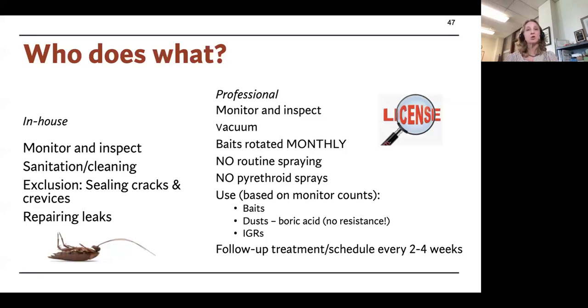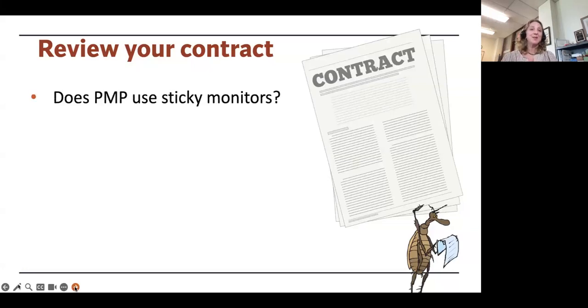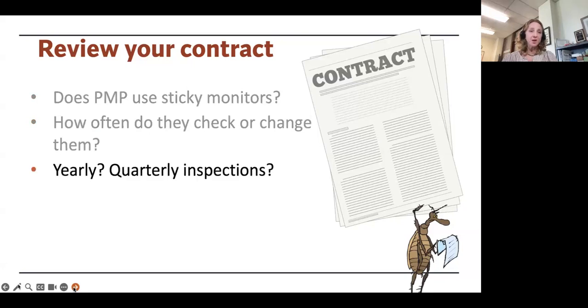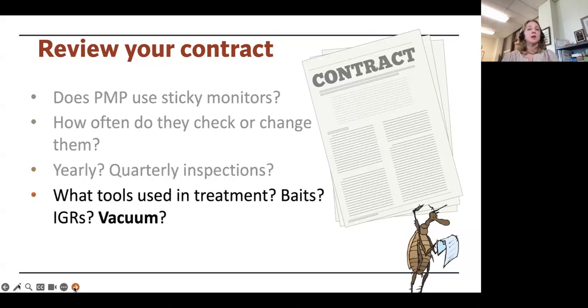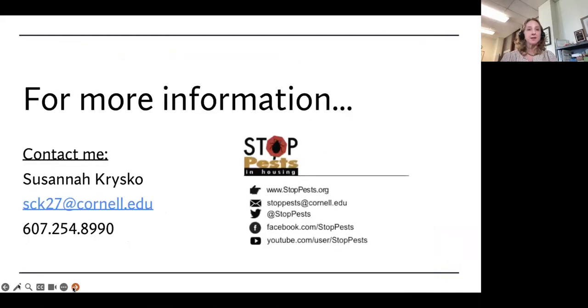Other thing I think everyone should be doing is reviewing your contract. Know what you're paying the pest control company for and make sure that they're doing it. Do they look in your contract? Are they required to use sticky trap monitors? How often do they change or check them? Are they doing yearly or quarterly inspections for cockroaches? What tools are they using? Are they using baits, insect growth regulators? Are they using a vacuum? Really important. And are they visiting every two to four weeks until the problem is eliminated? Pest control is never a one-and-done situation. It always requires multiple visits.